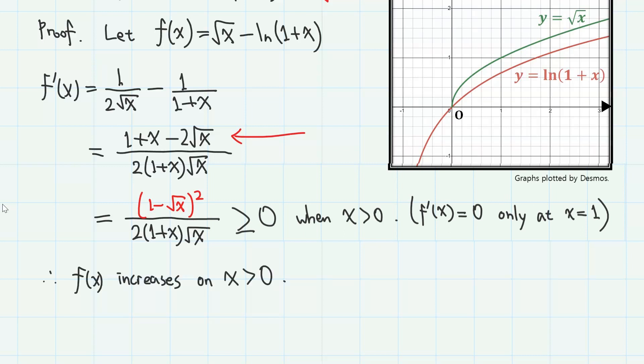Therefore, f(x) increases when x is positive. Moreover, we have f(0) equals 0. This proves that f(x) is always positive when x is positive.